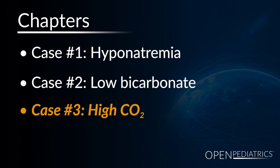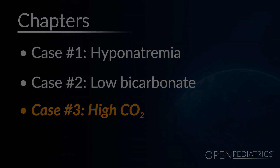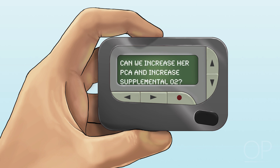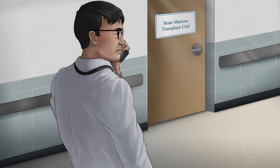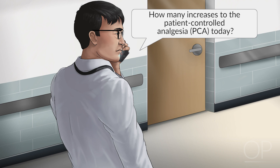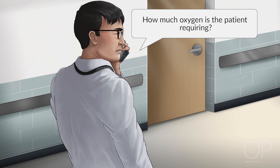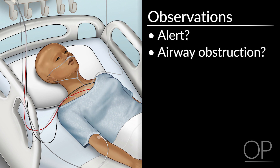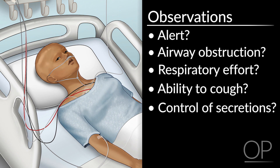Case 3, high CO2. You receive a page from the nurse: the patient had been sleeping deeply, but now she's awake and in pain. Her O2 sat is 90%. Can we increase the PCA and increase supplemental oxygen? Questions to ask on the phone: What phase of transplant is the patient in? How many increases to the PCA have been made today? How much oxygen is the patient requiring? In the room, observe the patient — notice the level of alertness, signs of airway obstruction, evidence of respiratory effort, ability to cough, and control of secretions.